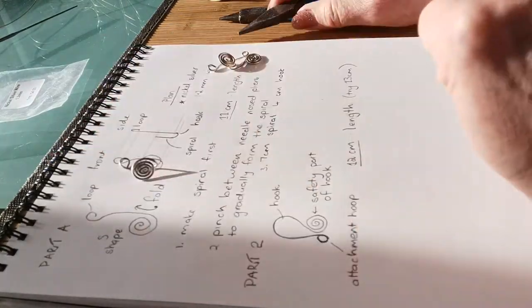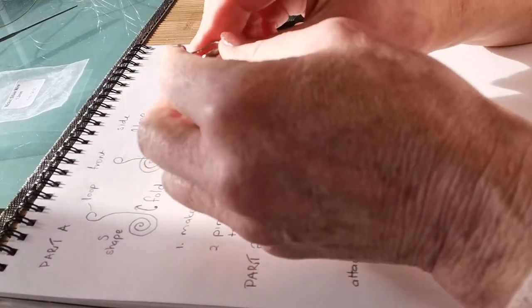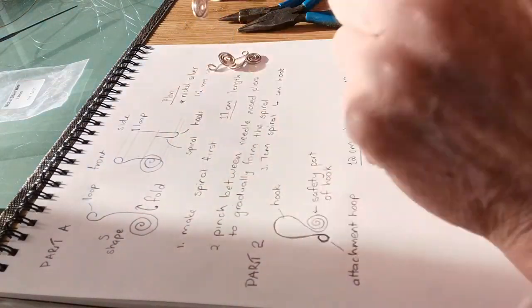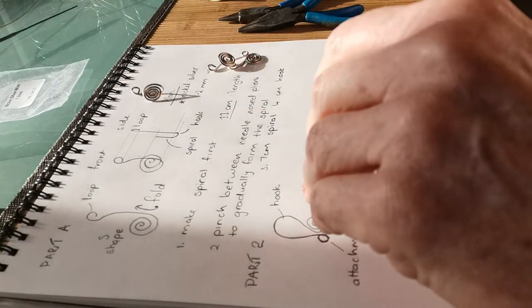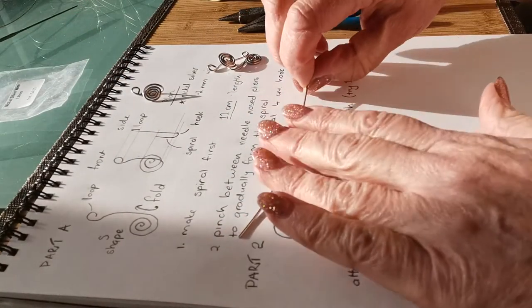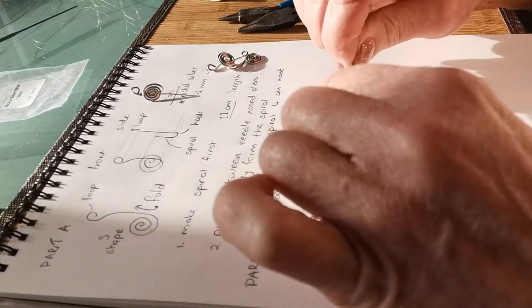That's how I make my hook and that's how I made that hook. You can see the hook shape, that's how the hook part works. Now on to the next piece, which I'm going to try 13 centimeters this time because I think it was a bit small.